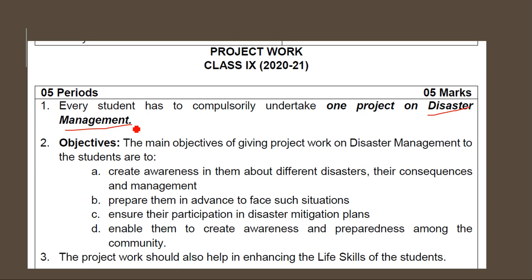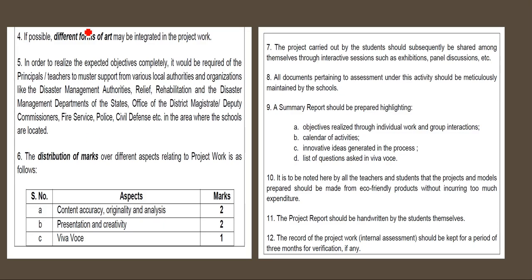You can pause the video and read the objectives — I'm not going to explain them here. This is the project you are going to undertake in your summer vacation, so be prepared with the content and pictures. The marking is: Content Accuracy — 2 marks, Presentation and Creativity — 2 marks, and Viva — 1 mark, where questions will be asked on the project you made. The project should be handwritten, not printed. Pictures drawn by hand are preferred.